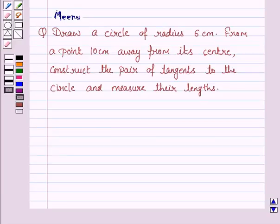Hello and welcome to the session. Let's work out the following question. It says, draw a circle of radius 6 cm from a point 10 cm away from its center. Construct the pair of tangents to the circle and measure their lengths. Let's now move on to the solution.